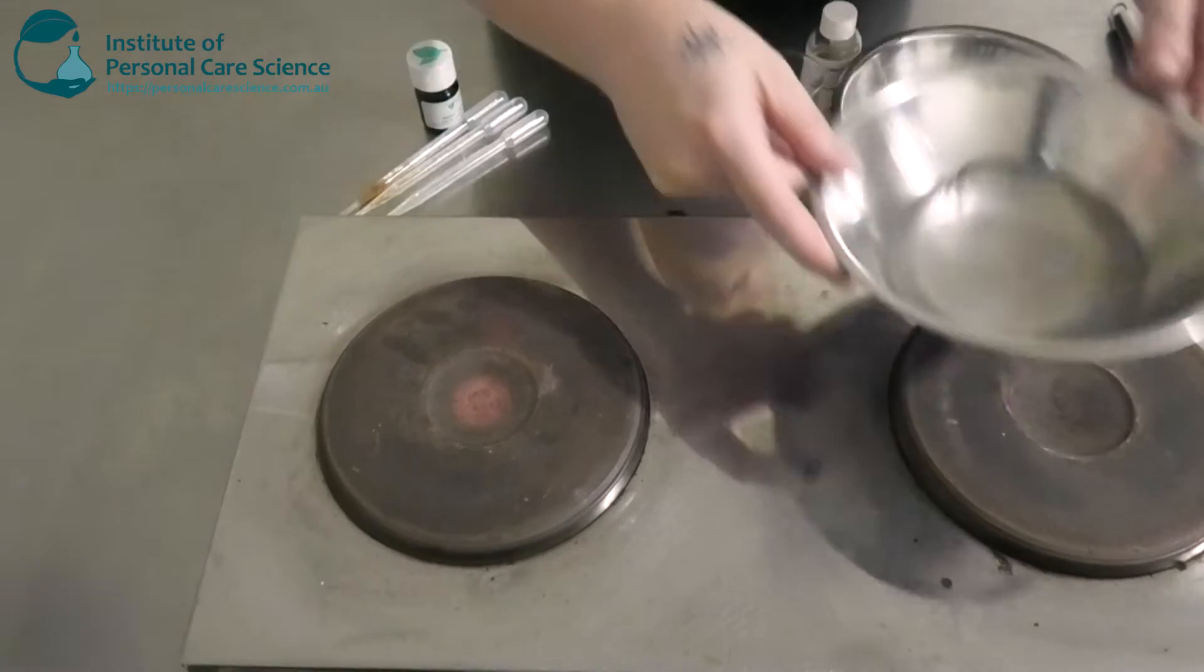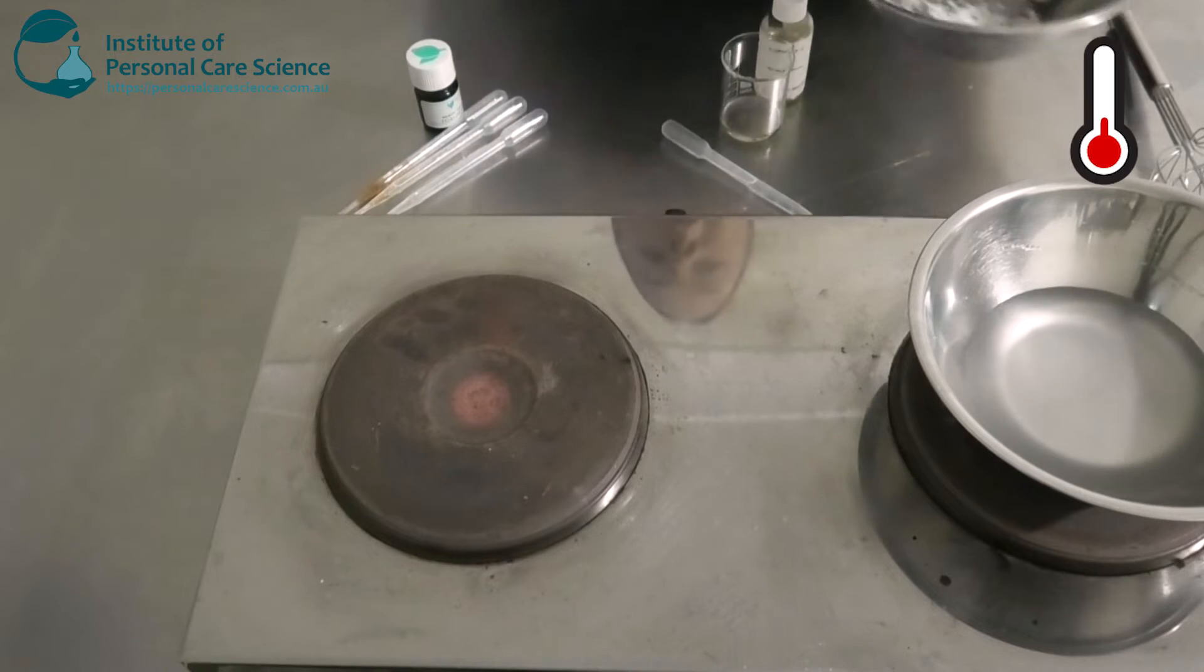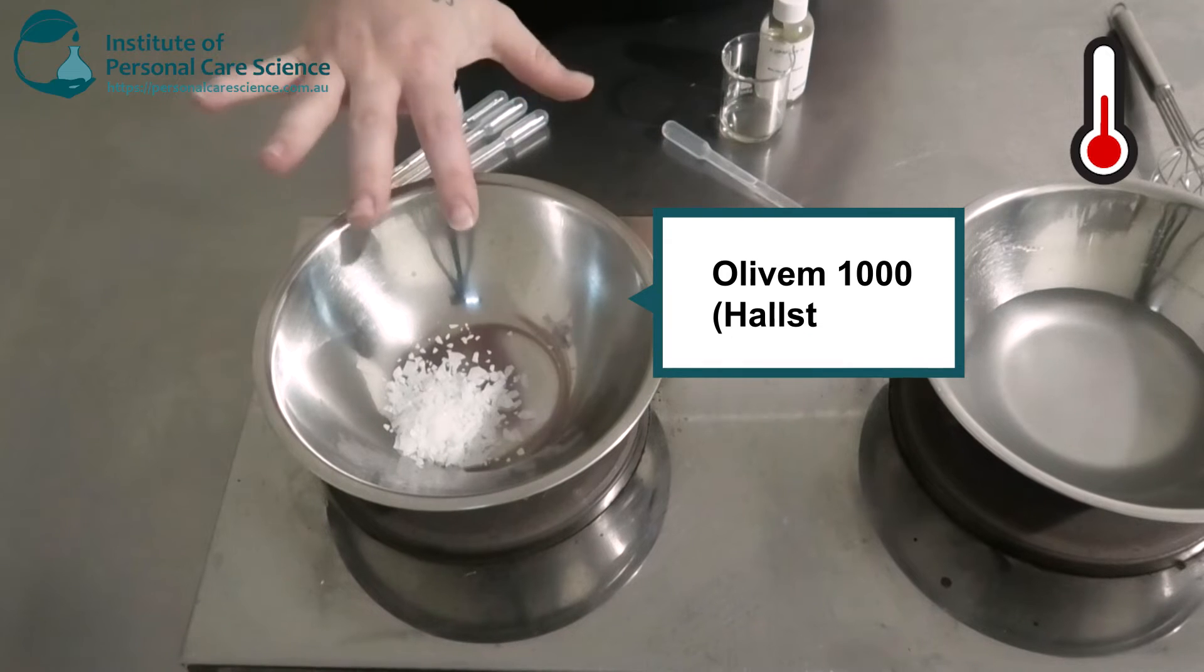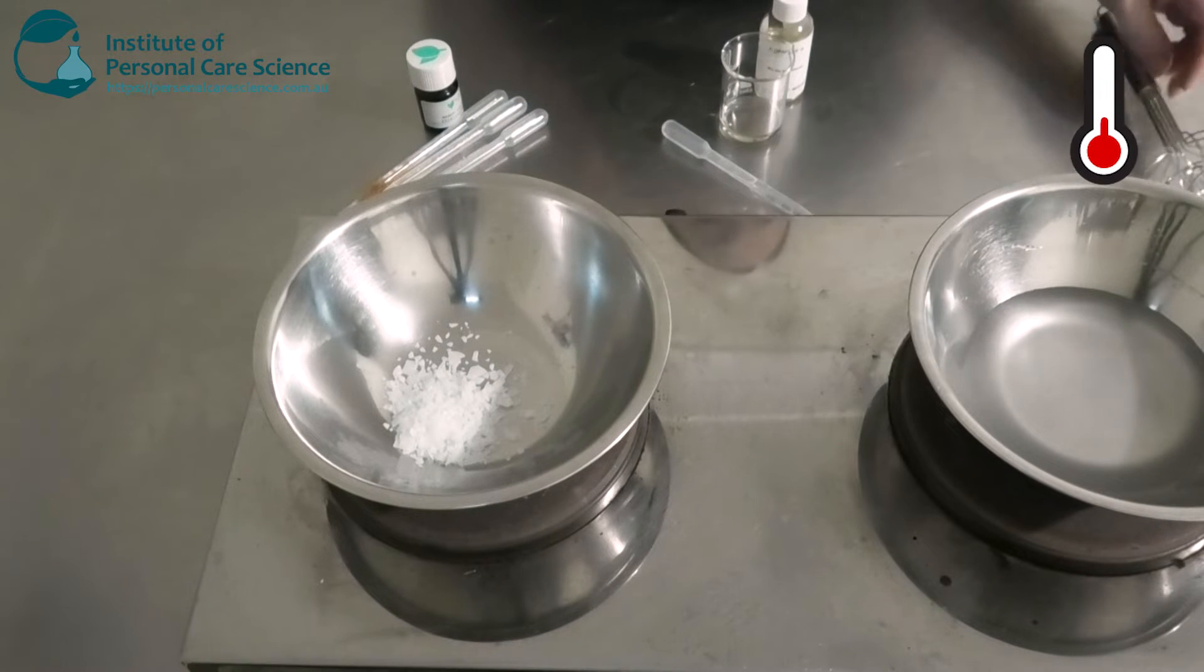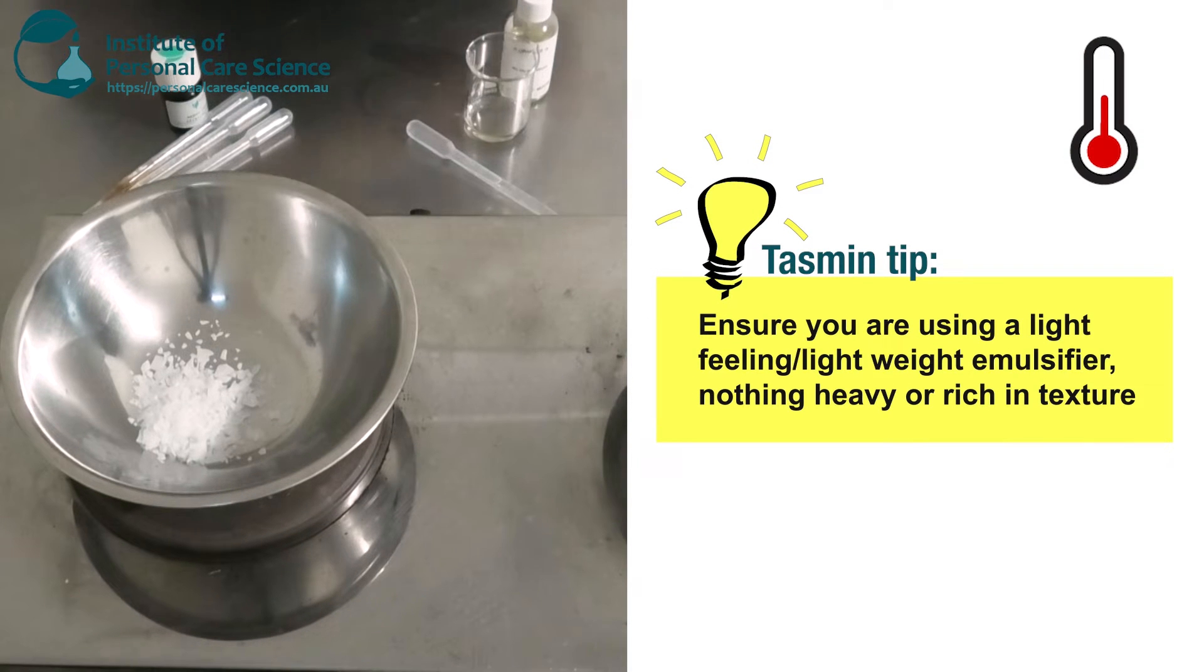Okay, so I'm going to pop that one there on heat, and while that's heating I'm going to put together my oil phase. So in my bowl here I've got the Olivem 1000. This is an oil and water non-ionic emulsifier. So this generally gives really light emulsions. Now the point of featherweight or featherlight products is that they are extremely light, so they're perfect for oily skin and also humid climates as well.